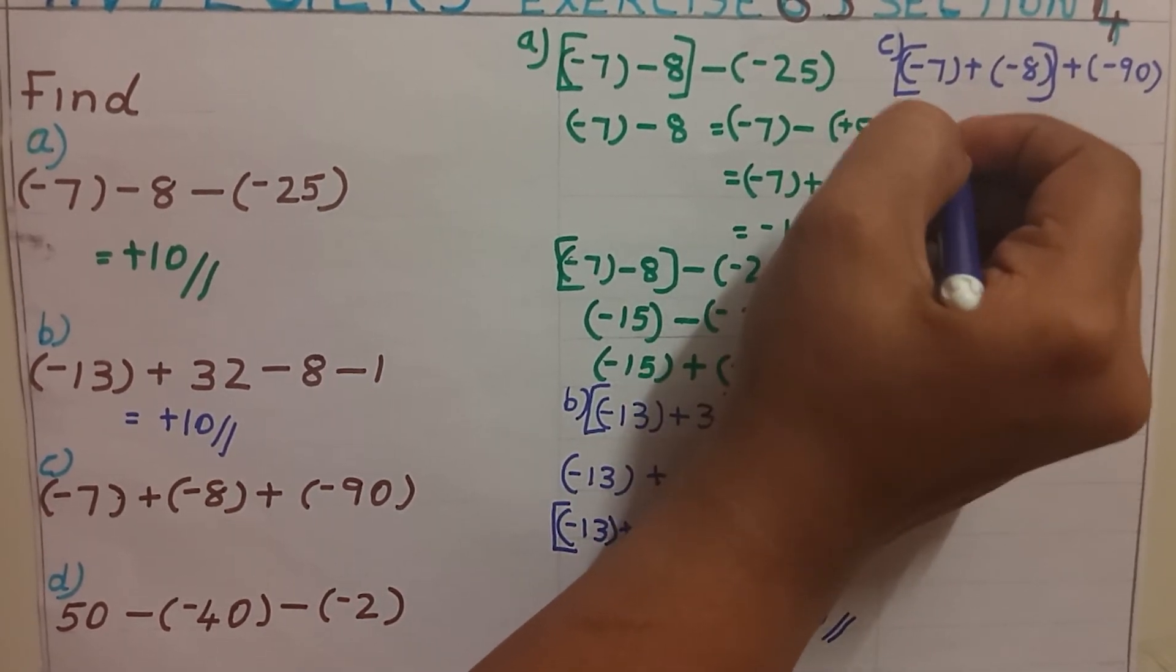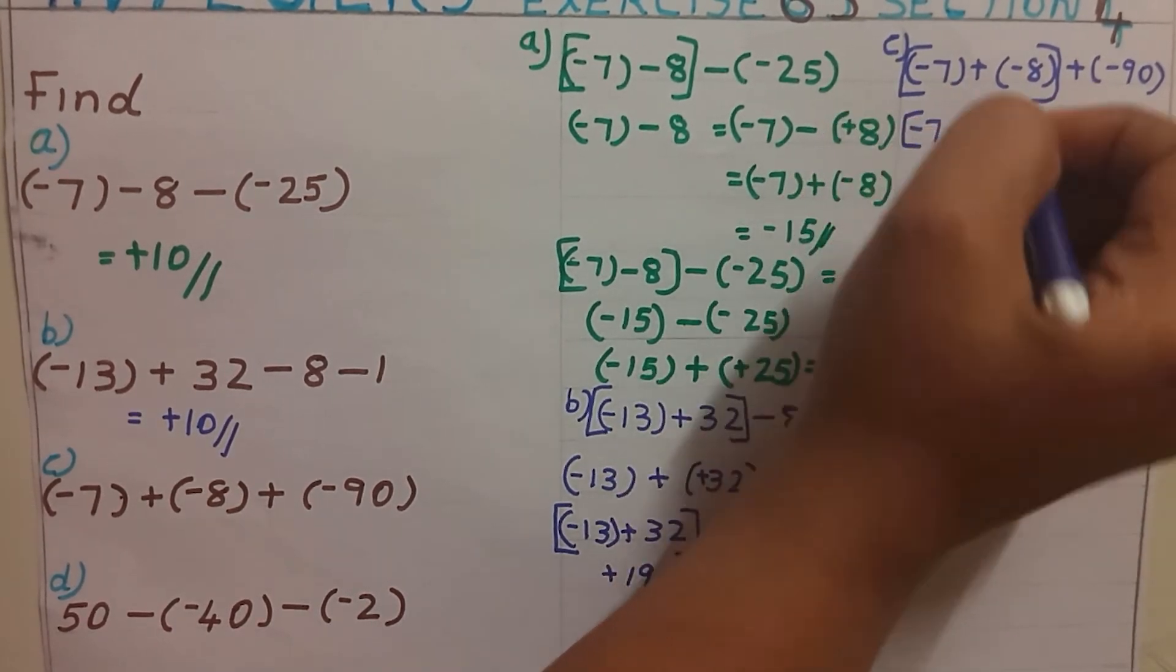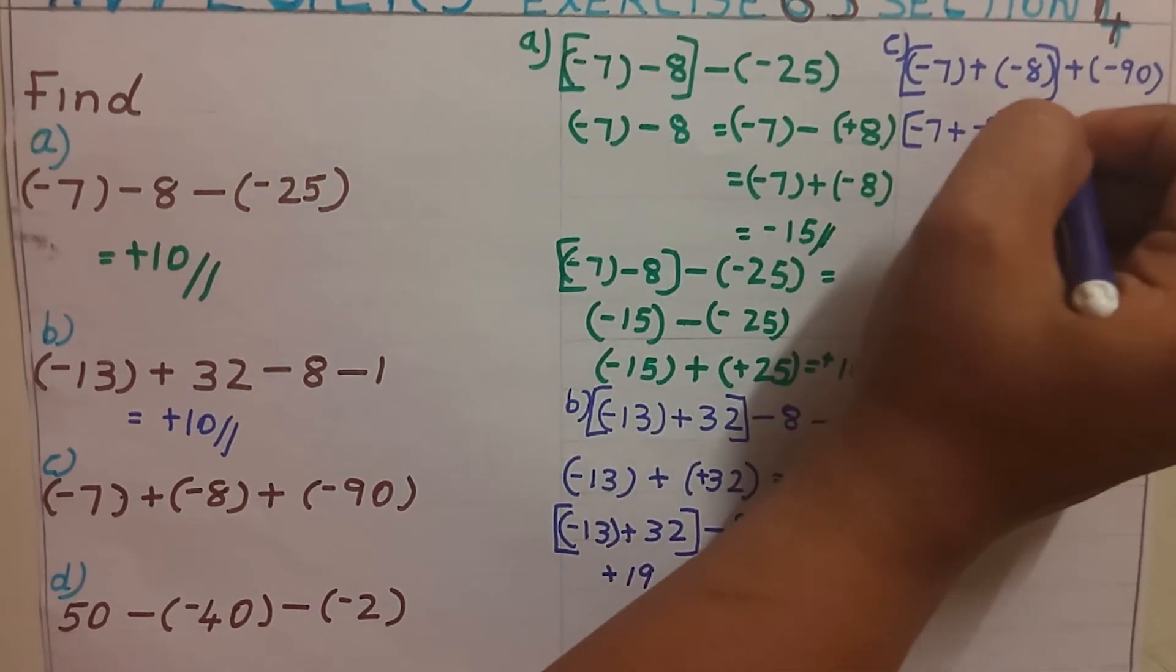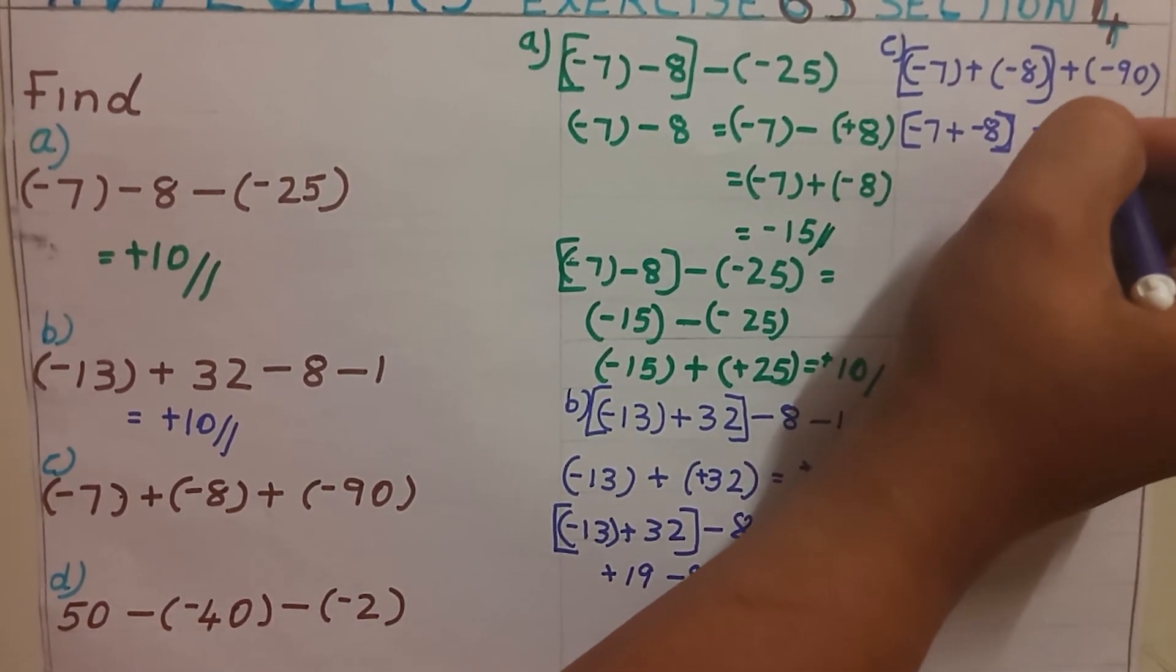Minus 7 plus minus 8 equal to, we know by applying the rules, we know that it is minus 15.